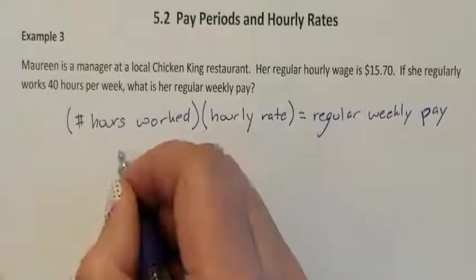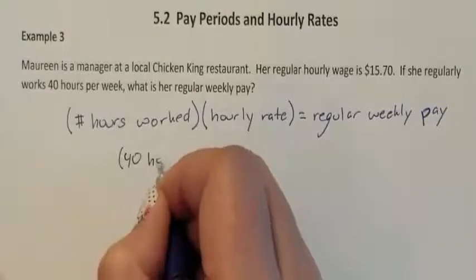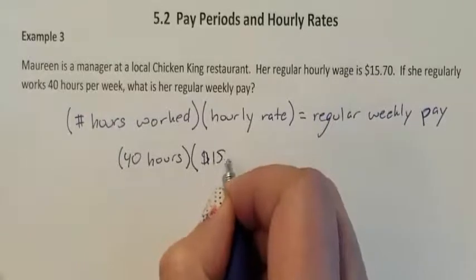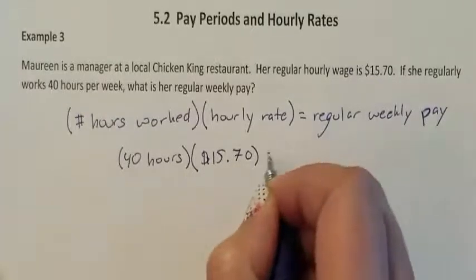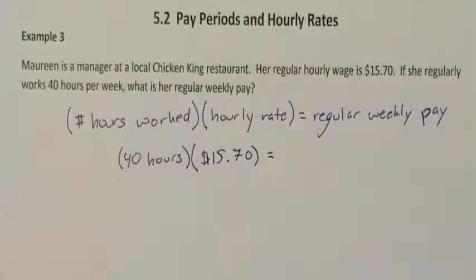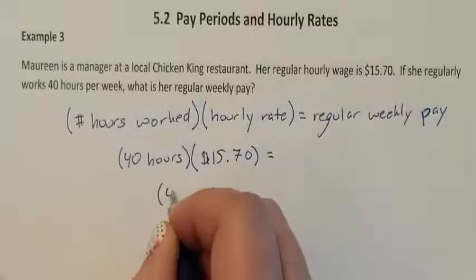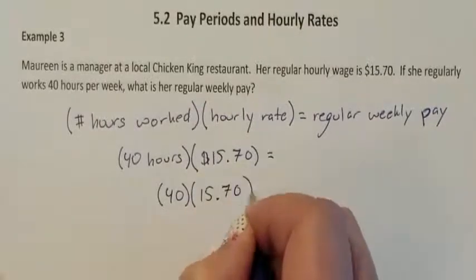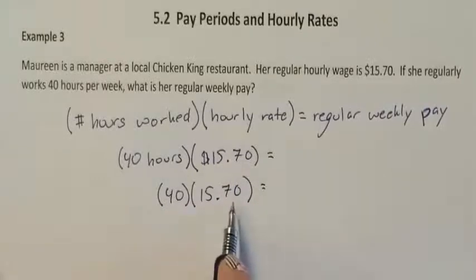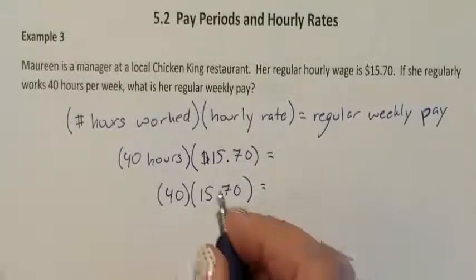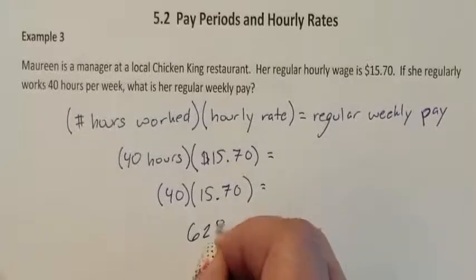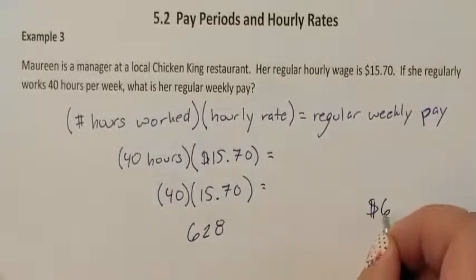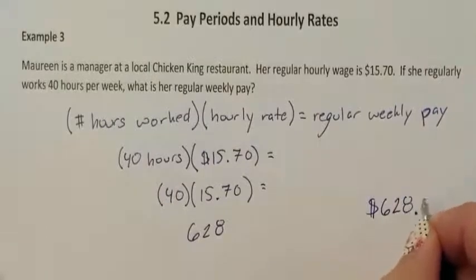So how many hours did she work? She worked 40 hours. And what was her hourly rate? Her rate is $15.70. That is her weekly regular pay. So on our calculator, we're going to do 40 times $15.70. And 40 times $15.70 on my calculator gives me $628.